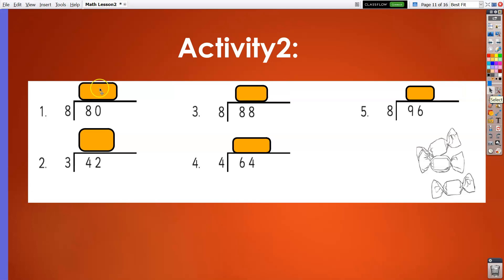Time is up. 80 divided by 8: 8 by 8 is 1, 0 by 8 is 0. 42 divided by 3: 4 divided by 3 is 1, then remainder 1 becomes 12. 12 divided by 3 is 4. 88 divided by 8 is 1 and 1. 64 divided by 4 is 1 remainder 2.